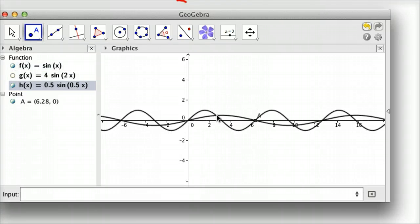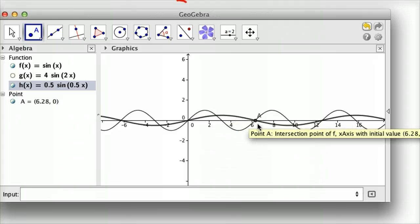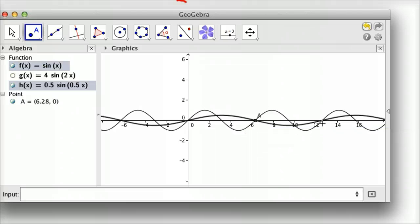But notice it only goes half as high, and by the time you get to 2 pi, it's only halfway done with the cycle. And so it's clear over here to 12 point whatever, or 4 pi, that we get the full cycle completed. So this is a really narrow, elongated wave.